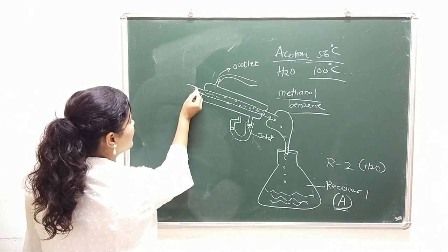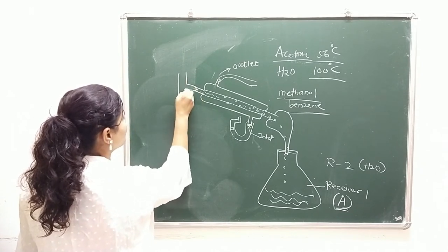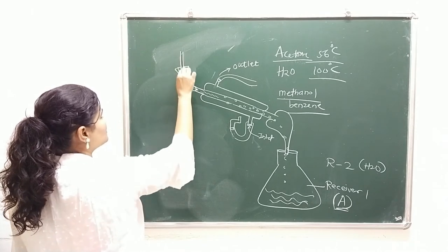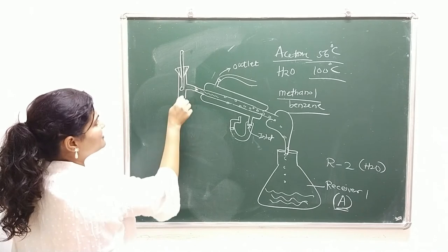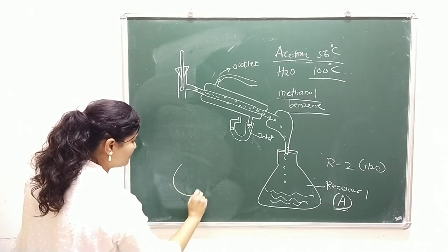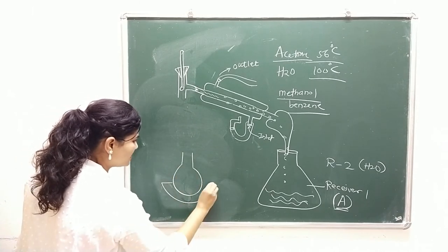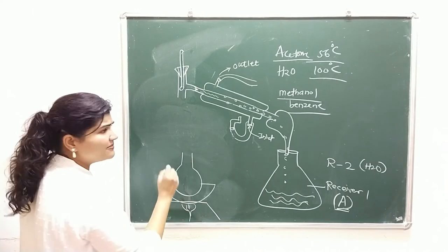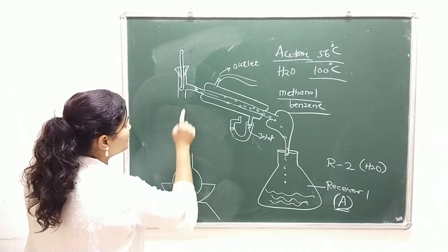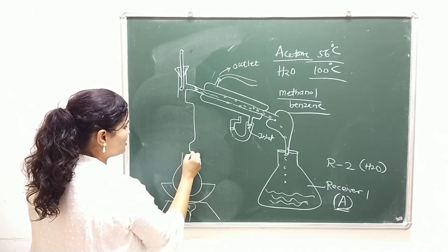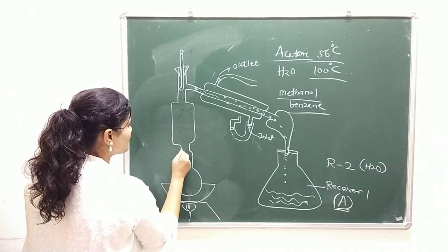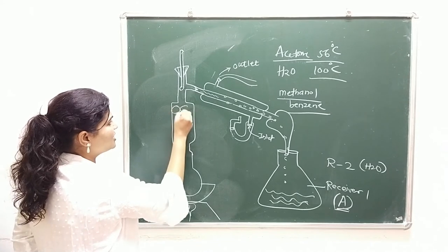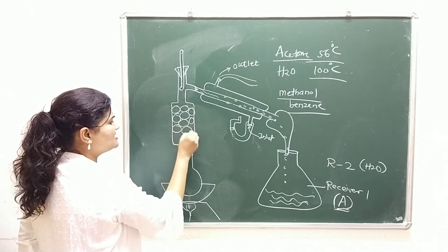Looking at the modified setup: the thermometer and side arm assembly remain as before, and the RBF sits in the oil bath on the stand with the Bunsen burner. What I am going to do now is attach a fractionating column in between the RBF and the side arm. There are various types of fractionating columns — the one I am using here is a packed column, though you can also use a bubble plate column.